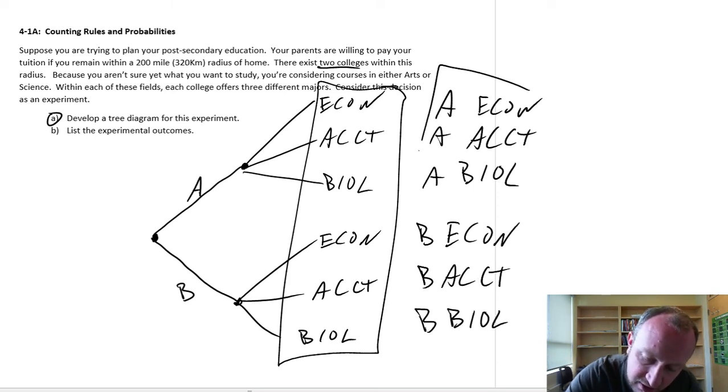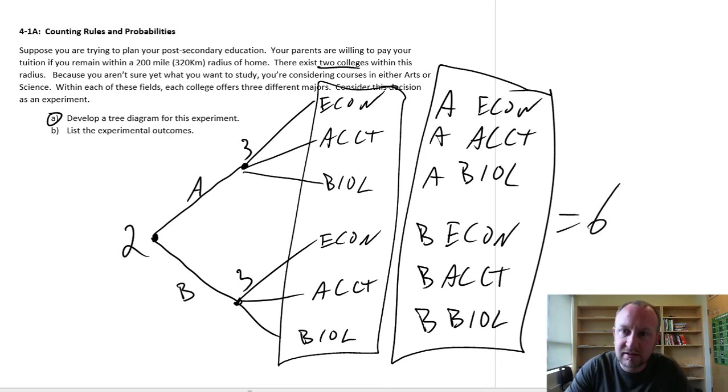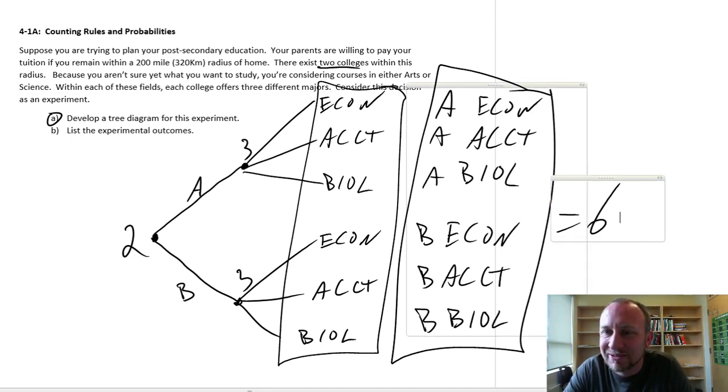So I have six possible outcomes. Notice that's two times three. So there's six possible outcomes in this decision, or potentially in some experiment. Okay, so that's all there is to producing a decision tree to identify the number of possible outcomes from an experiment or a decision. Nice short video, thanks for watching.